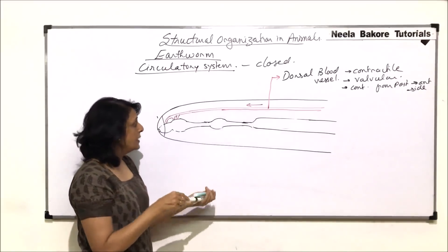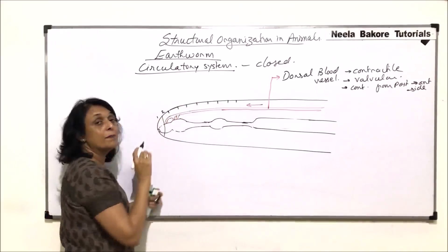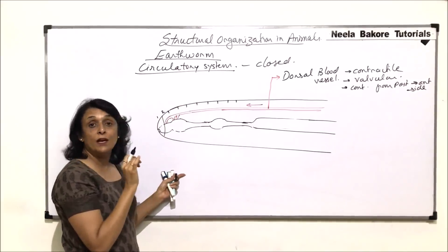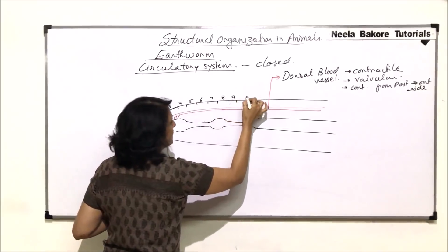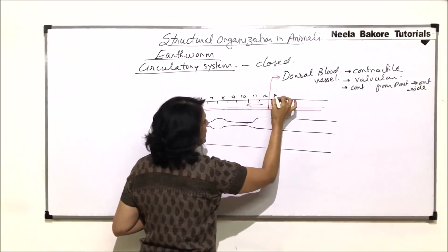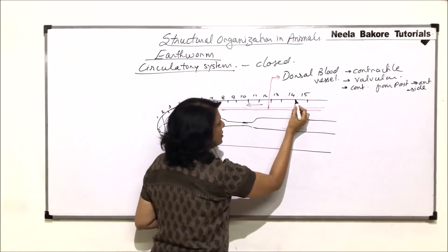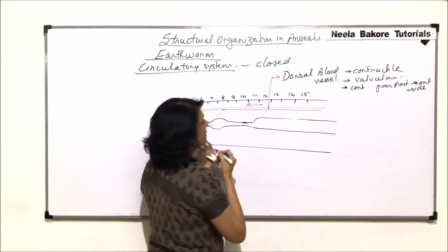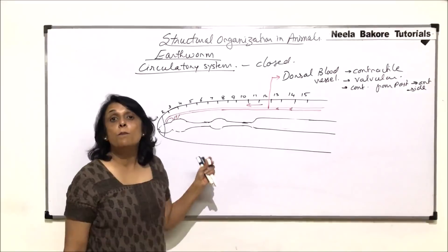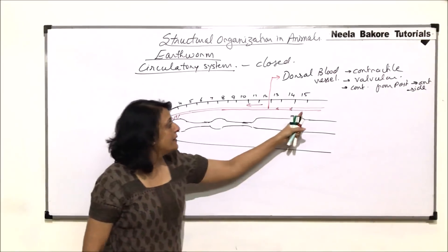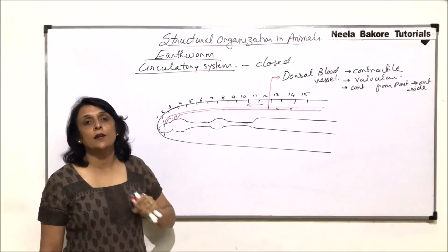Where are these valves present? Looking at the segments — just after each segment, there is a valve. Valves prevent backward flow; they maintain blood flow in only one direction. In other words, valves help in the unidirectional flow of blood.